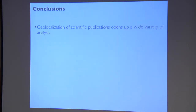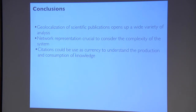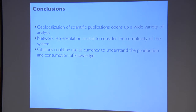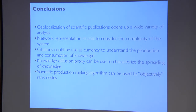In conclusion, looking at geographical information in publication databases is very productive. There is a lot to explore and you can get information about socio-economic conditions of countries. Using a network representation helps map and characterize the complexity of the system. A simple economical analogy classifies nodes in terms of production and consumption of science, the knowledge diffusion process characterizes how knowledge spreads beyond local measures, and the scientific ranking algorithm ranks nodes more objectively than H-index or citation counts.